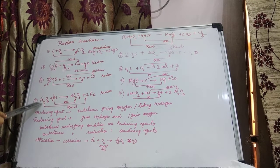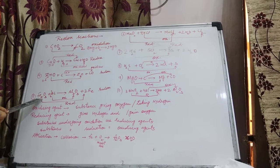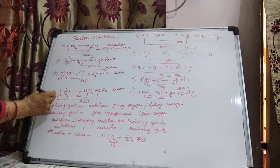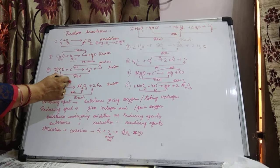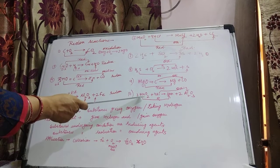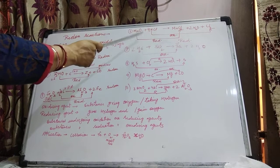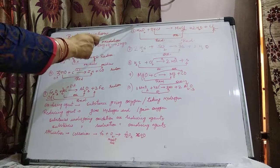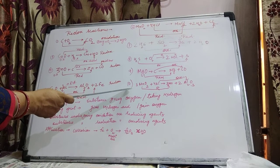In Fe₂O₃ + Al: Fe₂O₃ undergoes Reduction — removal of Oxygen — so Fe₂O₃ acts as the Oxidizing agent. Aluminium is getting oxidized, so Aluminium acts as the Reducing agent. The remaining reactions 6 to 10 are given as homework — identify which substance is the Oxidizing agent and which is the Reducing agent, and ask me if you have any difficulty.